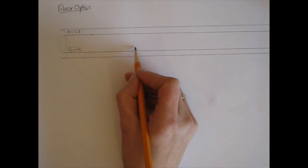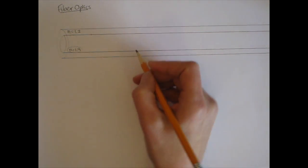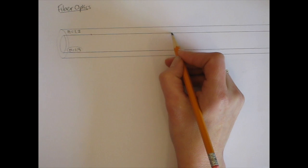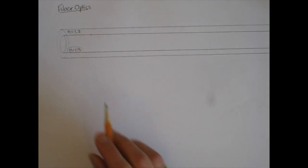Once again, when it hits this boundary, it's going from high to low, so we want it to totally internally reflect and you can have it bounce back and forth without leaving this inner core.